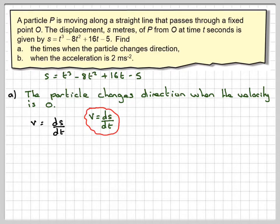So differentiating this term by term, we're going to get 3t squared plus 2 times 8 minus 16t plus 16. And then obviously when we differentiate 5 at the end, we get nothing.